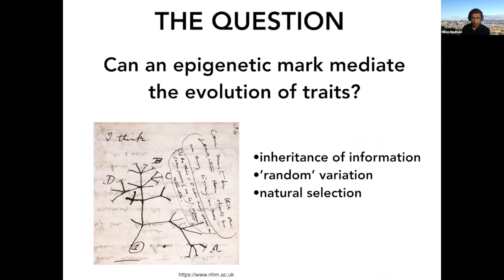That raises the general question: can an epigenetic mark mediate the evolution of traits? To have evolution, according to Darwin, you have to have inheritance of some type of information, random variation, and then natural selection to select out the winners.